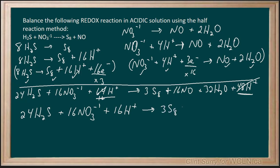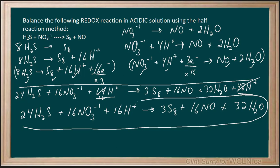Making 3S8 plus 16 NO plus 32H2O. And that is our balanced redox reaction in acidic using the half reaction method.